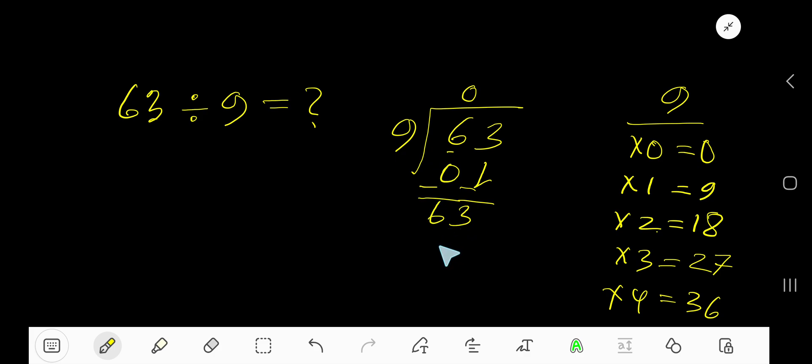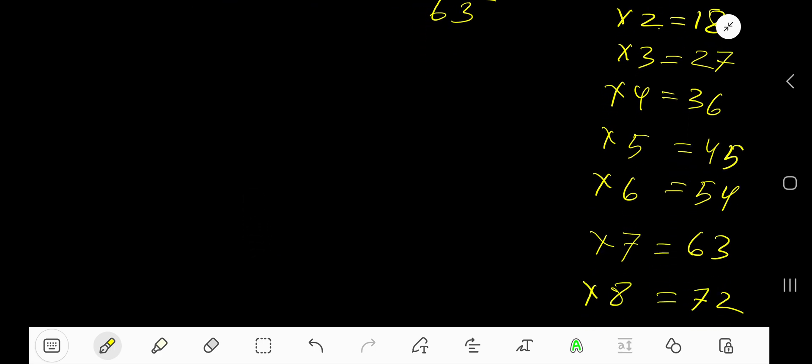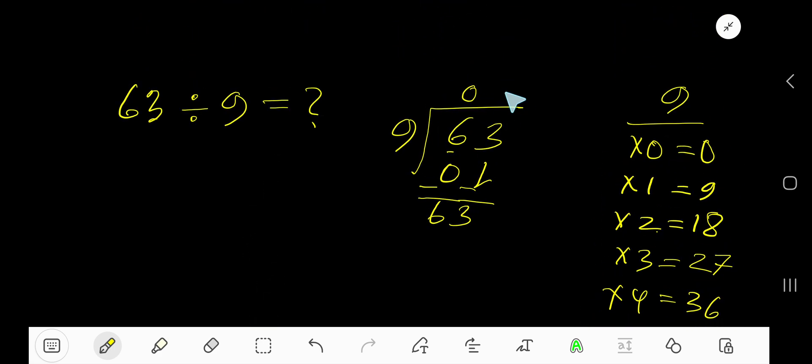Look, 9 goes into 60—it's 7 times, right? 7 times 9 is 63. Subtract: 0. As our remainder is 0, we are done. So 07 means 7. Our answer is 7.